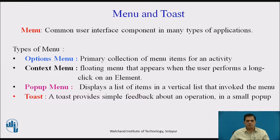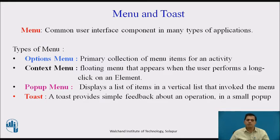Next we go to menu and toast. An Android menu is a user interface component used in many types of applications. To provide a familiar user experience, you should use the menu APIs for user actions. Menu is an important UI entity providing action options for Android applications. The types of menus are: option menu (primary collection of menu items for an activity), context menu (floating menu appearing on long click), pop-up menu (vertical list of items anchored to the invoking view), and toast (simple feedback in a small pop-up).